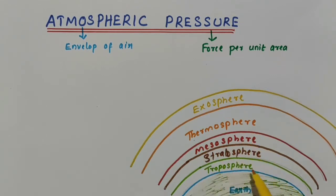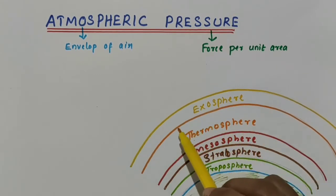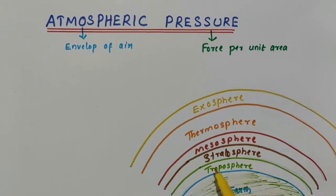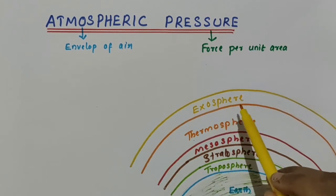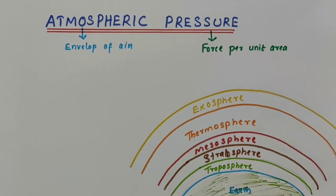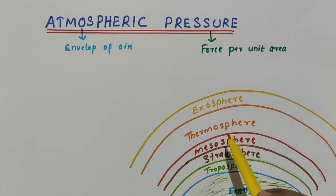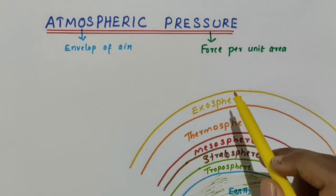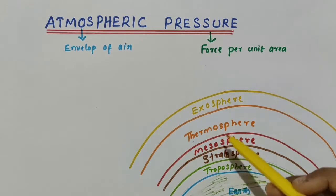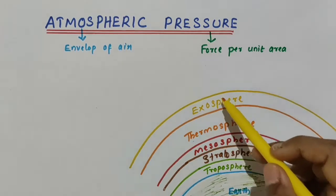Mainly we have the troposphere, stratosphere, mesosphere, thermosphere, and exosphere. The troposphere is the closest layer, which starts at the earth's surface and extends 8 to 14.5 kilometers high. The exosphere is the upper limit of our atmosphere, extending from the top of the thermosphere up to 10,000 kilometers. All other layers come in between these two.